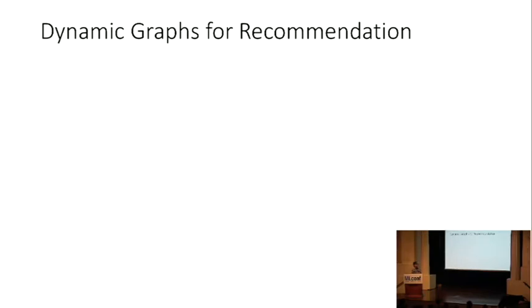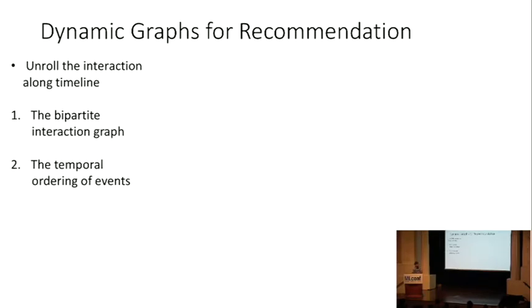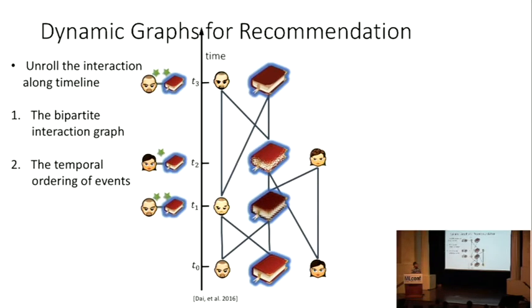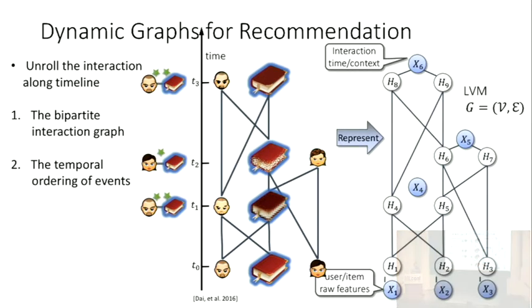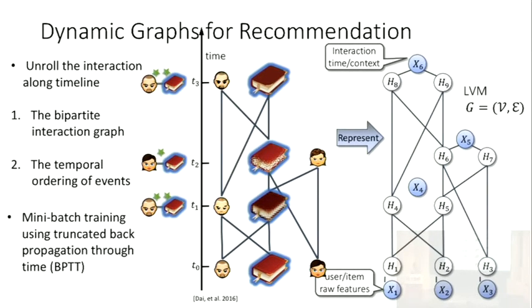Then come to the recommendation problem. What we do is to unroll the user-item interaction through time. Here we get such kind of a dependency graph where the user-item feature will evolve after each event happens to them. If you unroll through time, you'll get such kind of a dependency graph. You can abstract it as a kind of directed graph and apply the same trick we used before. But the problem here is you only have one gigantic graph. To make the training easier, we apply some stochastic methods and also use the truncated backpropagation through time, which is also a standard trick in training the recurrent neural network.